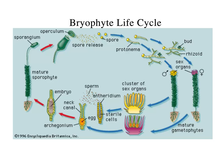Let's apply alternation of generations to a bryophyte — the mosses. The sporophyte stage on the left is diploid. The sporangium produces spores, which are haploid. The spores each grow into either a male or female plant, which then produce sperm and eggs. Those come together to form an embryo, which grows into the mature sporophyte — at which point it's diploid. For mosses, it's about 50/50 between the sporophyte and gametophyte stages.